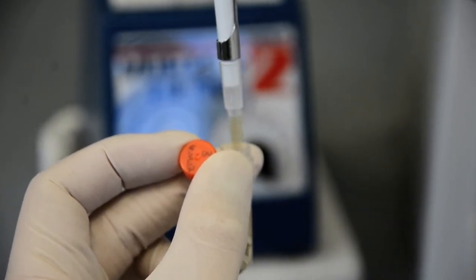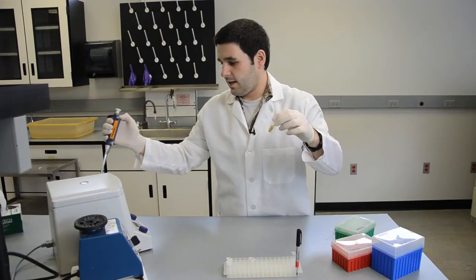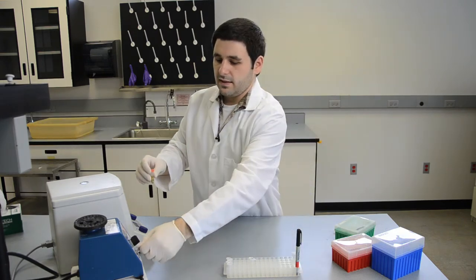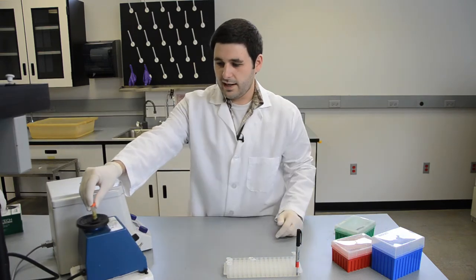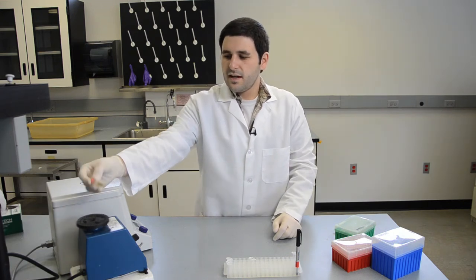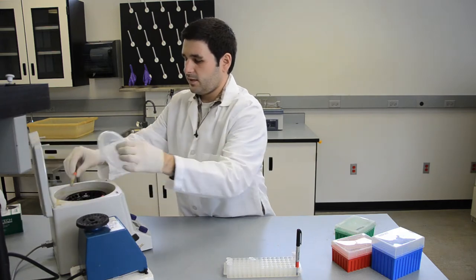It's a good idea to pipette up and down while inside the liquid to get all the CTAB out of the pipette tip. Then we want to give it a good vortex at the highest setting and centrifuge it very quickly just to get all the liquid down to the bottom.